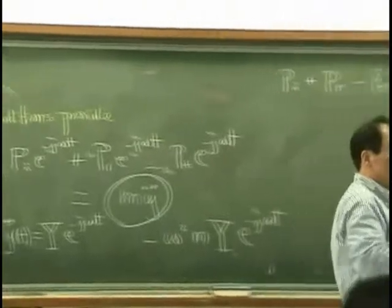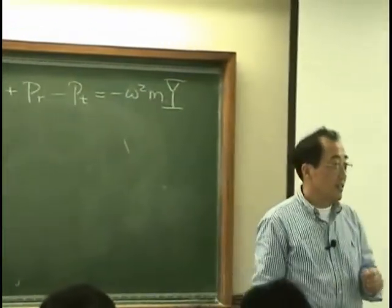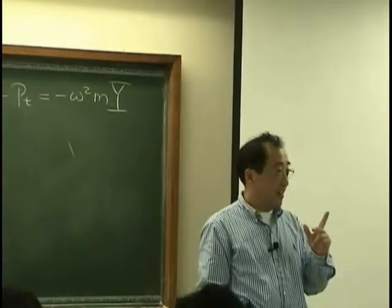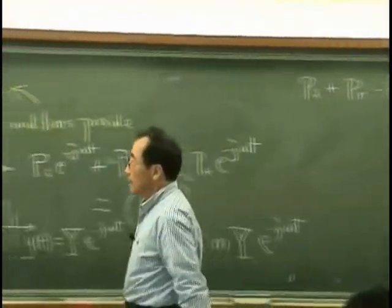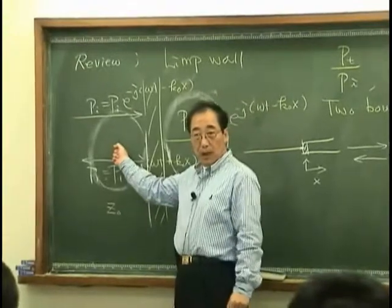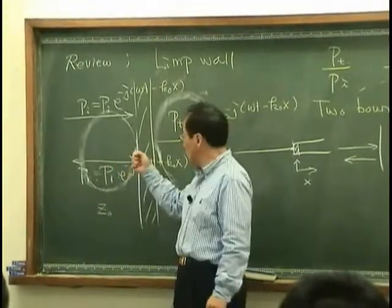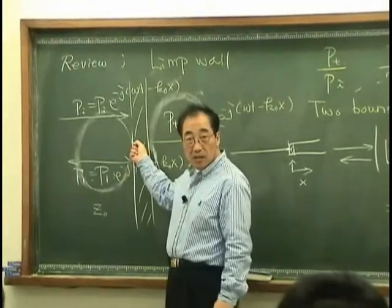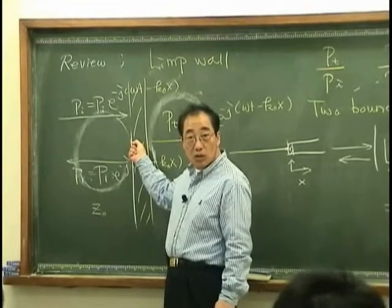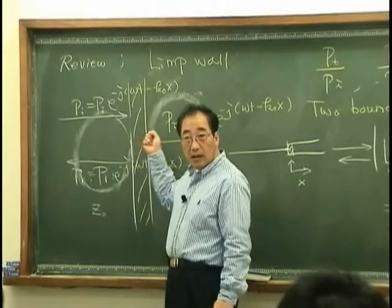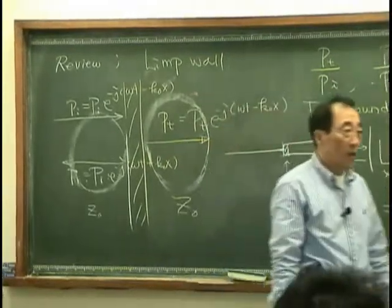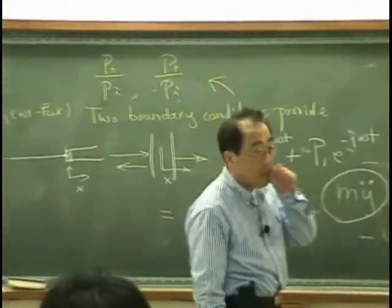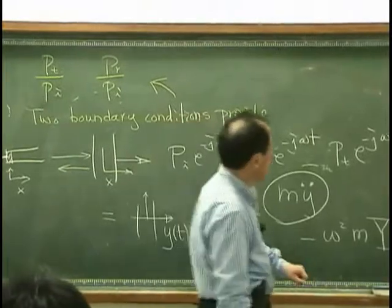Right? Yucheng, you remember that, huh? Therefore, what we can say is, the velocity of this fluid particle has to be the same as the velocity of this limp wall's velocity, and as well as this fluid particle's velocity. Okay. That's the another boundary condition.